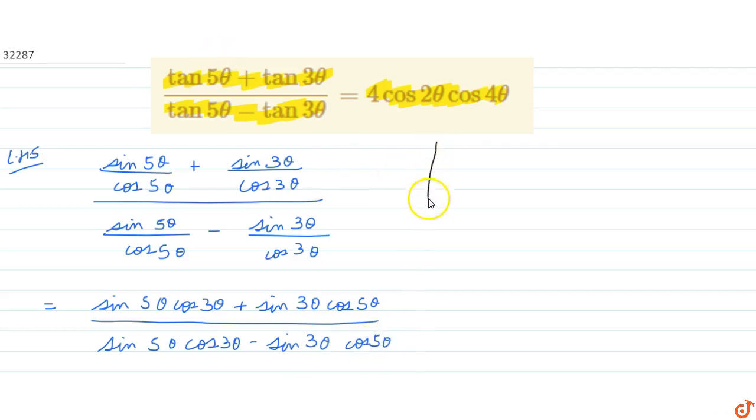Now look at the numerator term. Numerator term is equals to sin a, that is sin 5θ, plus b, that is 3θ. So numerator can be written as sin of 5θ plus 3θ, and denominator is equals to sin 5θ minus 3θ.